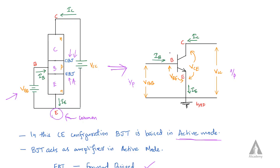The input side has the base as the input terminal and the collector as the output terminal, with the emitter as the common ground terminal. The voltage between base and emitter is denoted VBE, and the voltage between collector and emitter is VCE. The emitter current is IE, collector current is IC, and base current is IB.